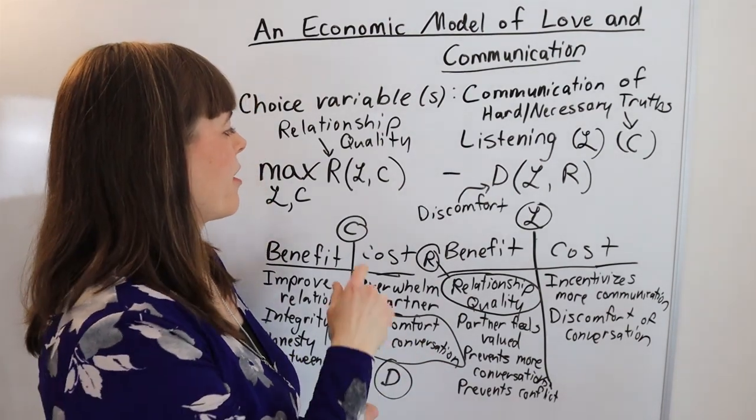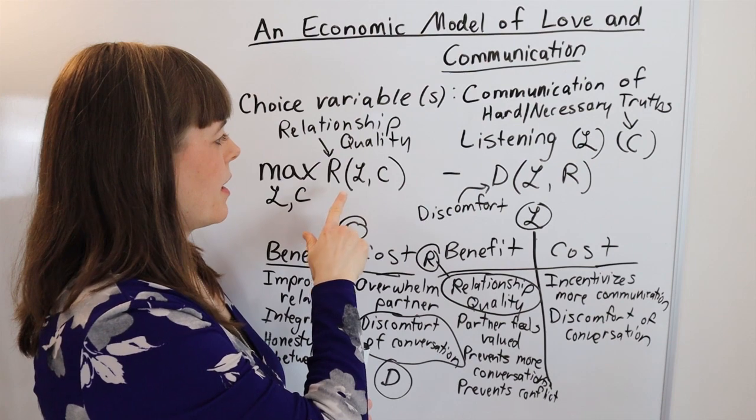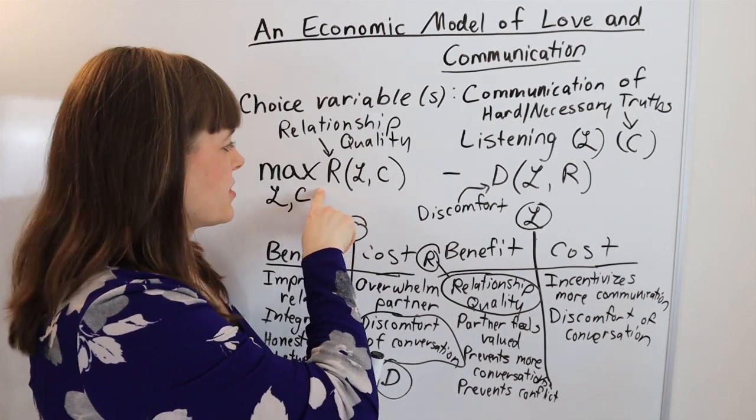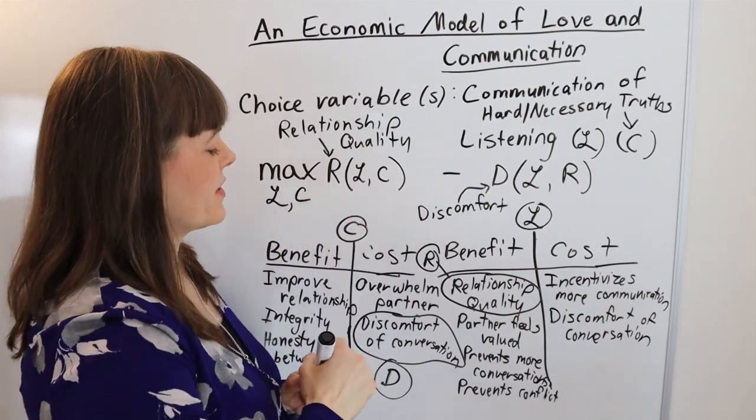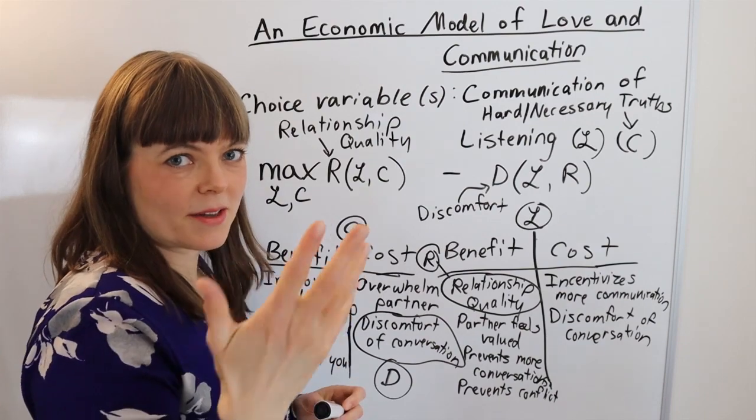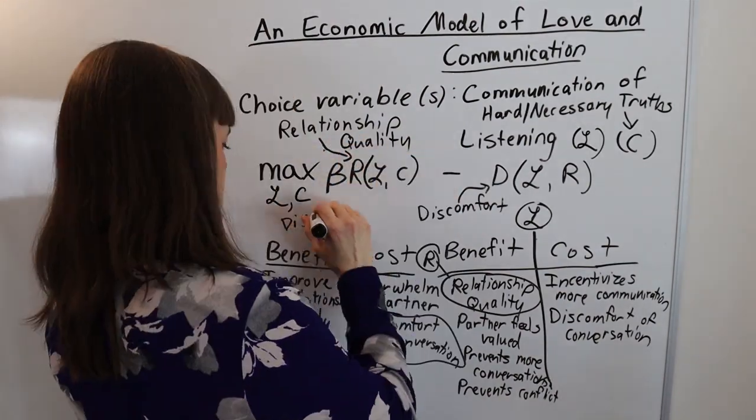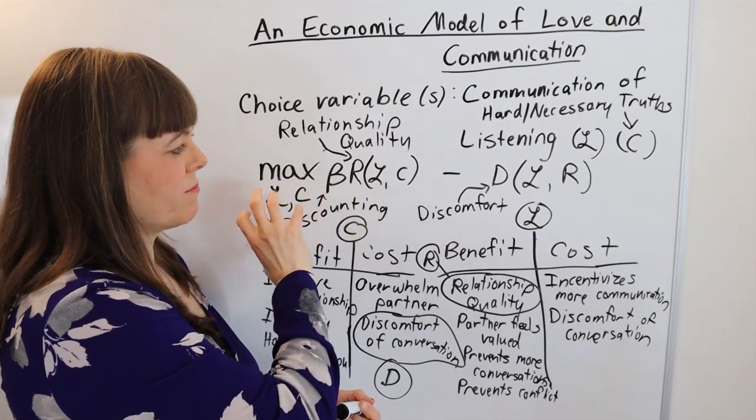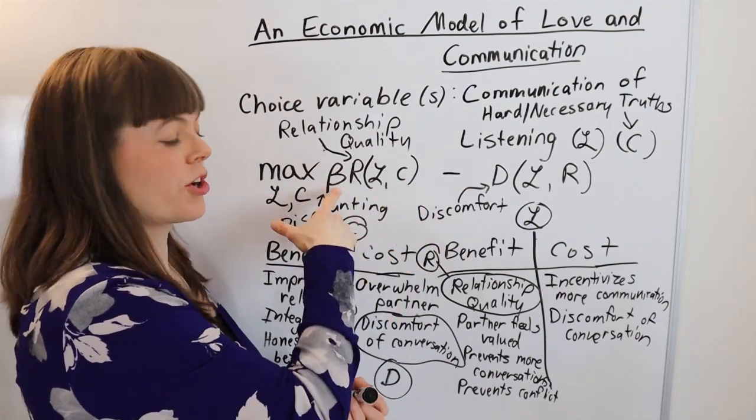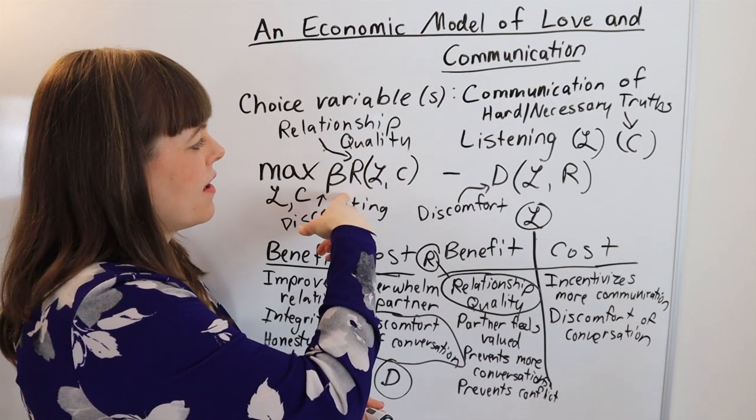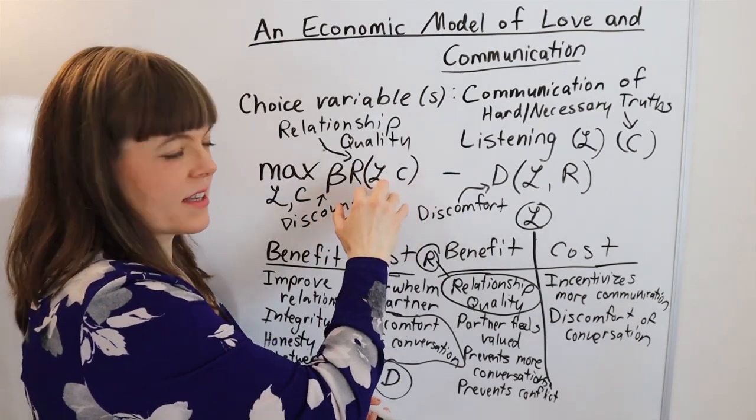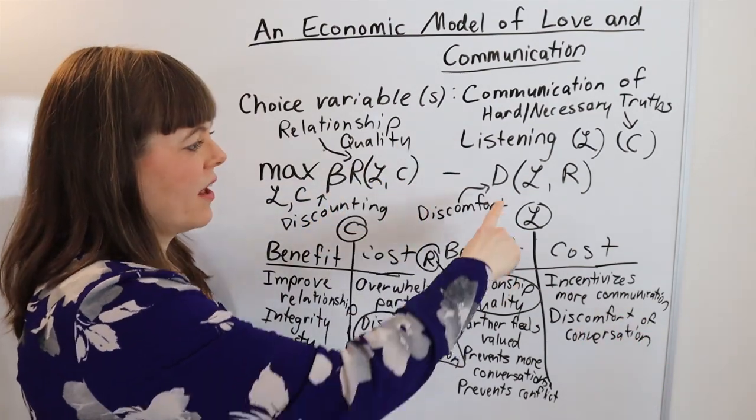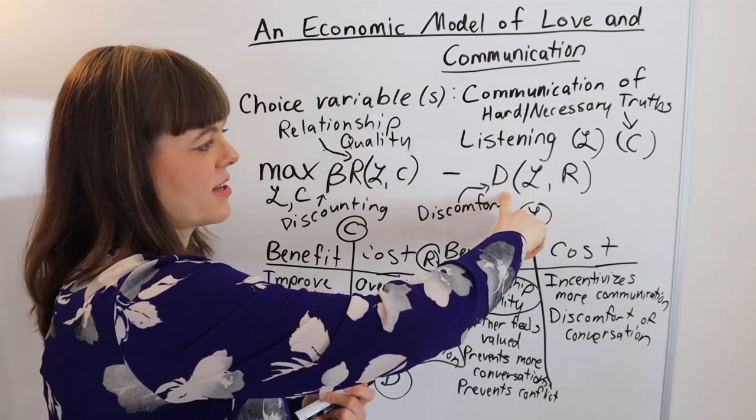In fact, you could build this into the model where relationship quality has a discounting term on this one. In fact, let me just do that. So I've just added this importance weight beta, which is basically you discounting the future. Beta's less than one, where the relationship quality is experienced in the future and the discomfort is experienced today.